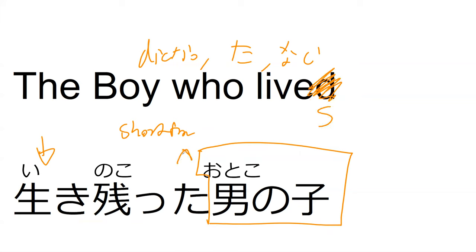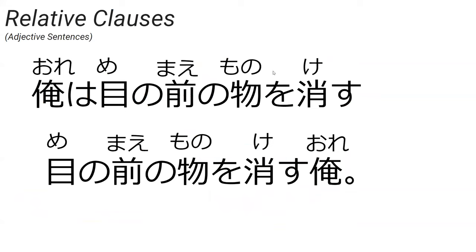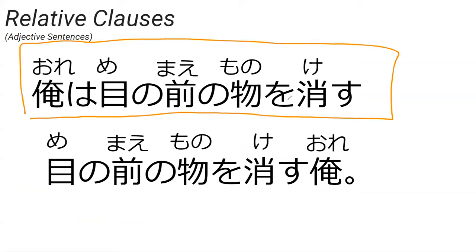The tensing would change just like in English. So 俺は目の前のものを消す means 'I will make something disappear right before our eyes.' That's the base sentence we'll be working with.